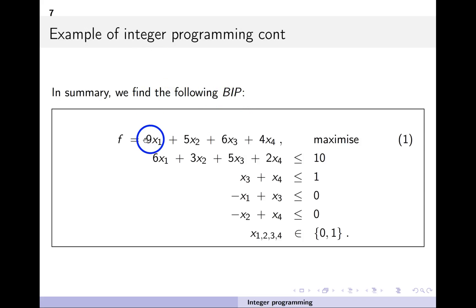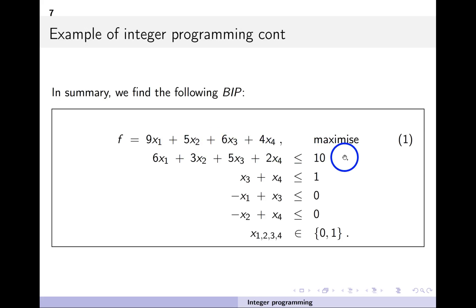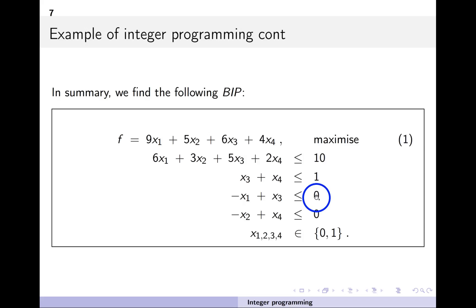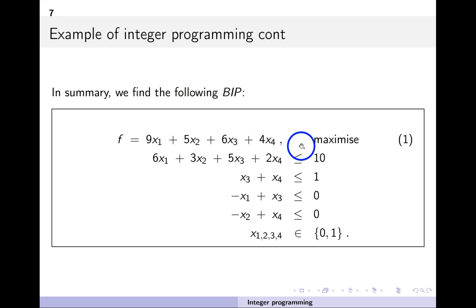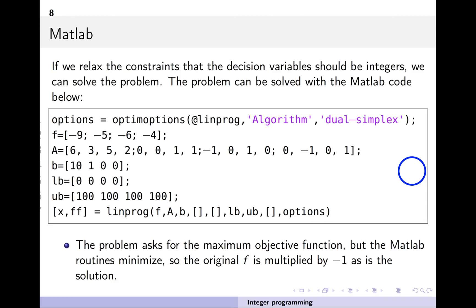So we've converted our text description into mathematics. Here's the objective function to maximize the net worth, here's the capital budget constraint, and here are the constraints for having just one warehouse and ensuring we only put a warehouse where there's a factory. The next step is to convert all of this into MATLAB.